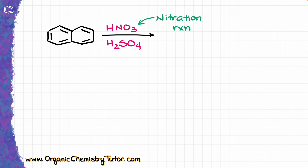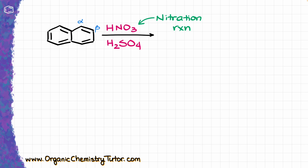Let's take, for instance, a nitration reaction. Naphthalene is a very symmetrical molecule with two planes of symmetry, so we have two possible places where the nitration can occur. Traditionally, we refer to those as alpha and beta positions, but if you prefer the IUPAC nomenclature, those would be the 1 and 2 positions correspondingly.